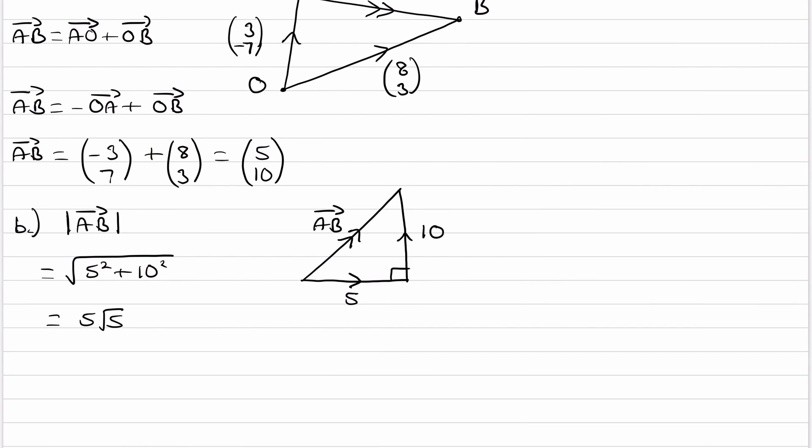So in general, whenever we're trying to find the magnitude of a vector, we can square the individual components of that vector, 5 and 10, square them, add them up, and then square root the result, and you end up with the magnitude.